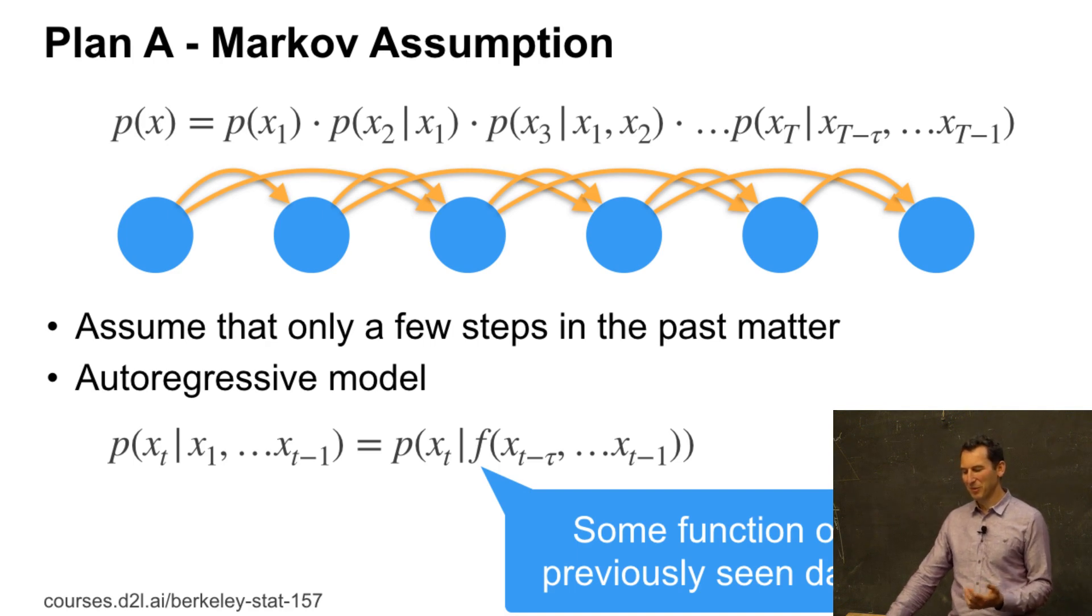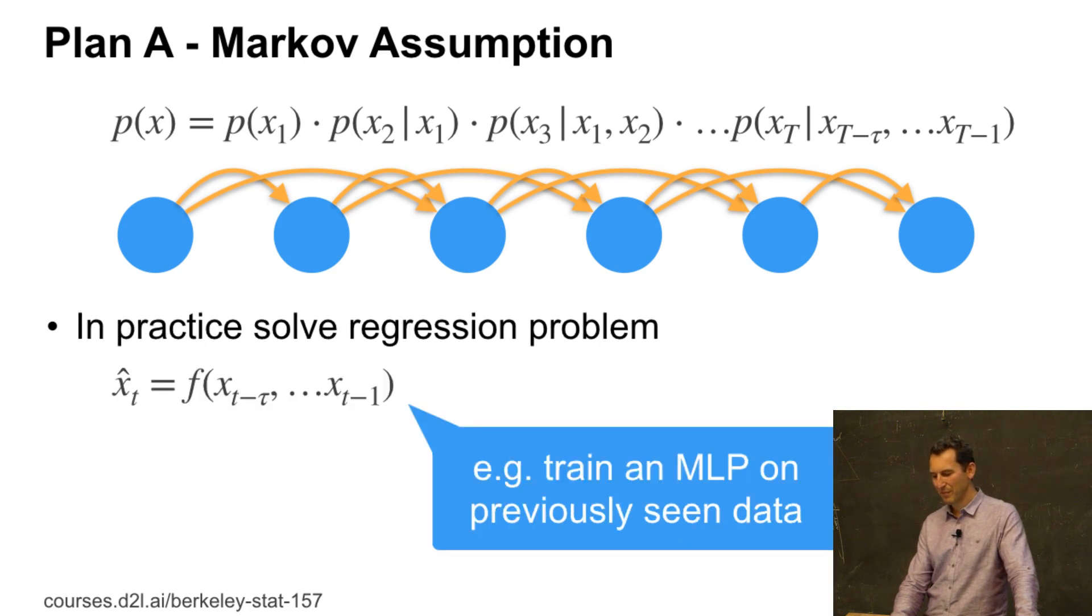Basically, the observations 2 steps into the past affect what happens next. And in that case, you can write out some autoregressive model, P of XT given X1 up to T minus 1 is F of XT minus tau up to XT minus 1. This is a perfectly reasonable model if tau is long enough, if I have a lot of data and all of that. But there are plenty of cases where this actually can fail. You could basically solve a regression problem like X hat is some function f of XT minus tau up to XT minus 1, and then I regress.